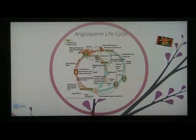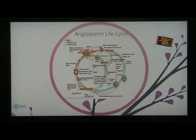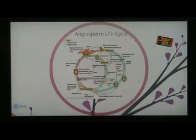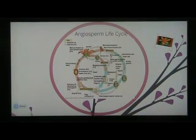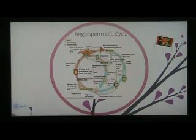Step 3 is between the megasporangium and the female gametophyte in the embryo sac. In the megasporangium of each ovule, the megasporocyte divides by meiosis, producing four megaspores. One survives and forms a female gametophyte.